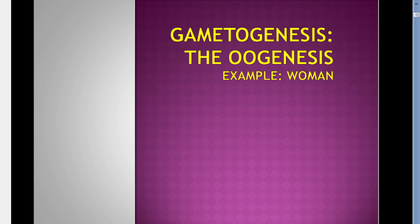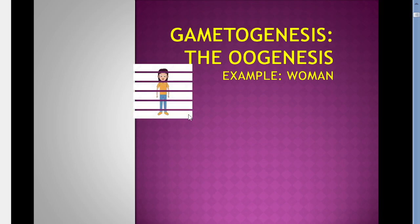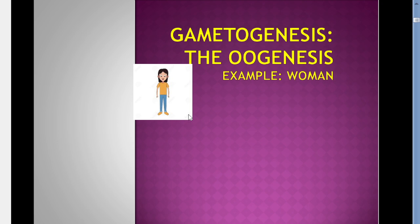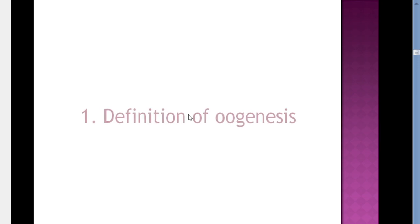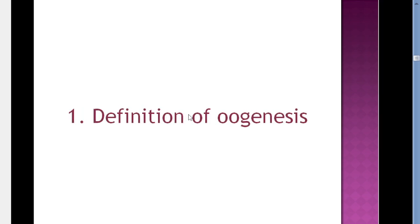Bismillah ar-Rahman ar-Rahim. This is Dr. Eskam. Hope that you are doing well. Today we continue with the second part of gametogenesis concerning oogenesis. As we have done in spermatogenesis, we'll take as example the oogenesis in women. We will talk about its definition, its period, its location, and finally its stages.